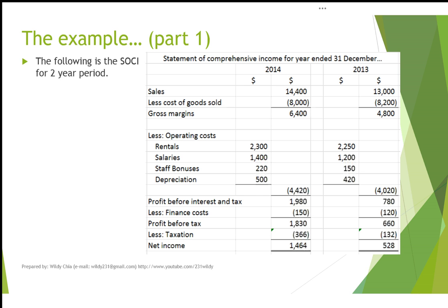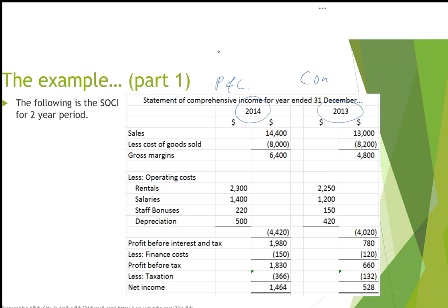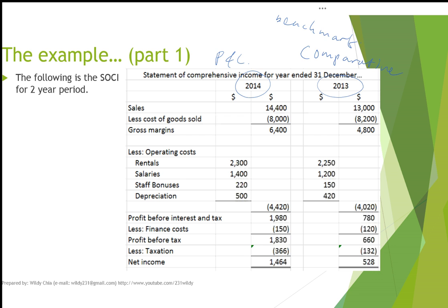This is the example I'm going to use — a very simple one. We have the statement of comprehensive income, the profit and loss account, for a two-year period. A proper and meaningful analysis will require at least two years of comparative figures. You won't be able to tell how well the business has done without comparative figures — they are absolutely essential. You could also use benchmarks like industry averages, but in my case I'm using two years of results from the same business.